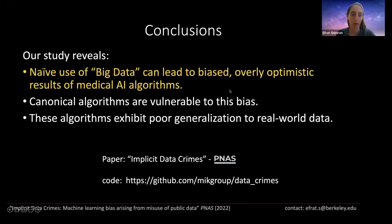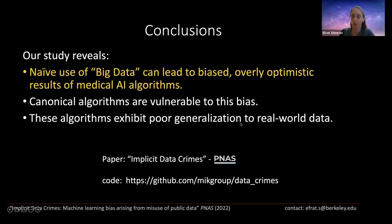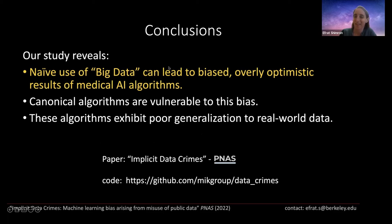To summarize: the study reveals that naive use of big data can lead to biased, overly optimistic results of medical AI algorithms. Canonical algorithms — compressed sensing, deep learning, and dictionary learning — are all vulnerable to this bias. This is not a small problem specific to one algorithm; it's a very general problem relevant to many algorithms. These algorithms also exhibit poor generalization to real-world data when trained on processed data. If you're interested in this work, our paper was recently published in PNAS, and we provide all the code and pretrained networks via the link shown. Any questions?